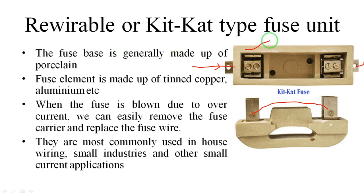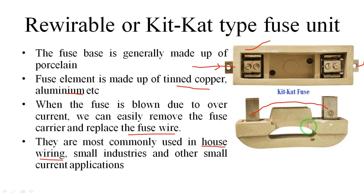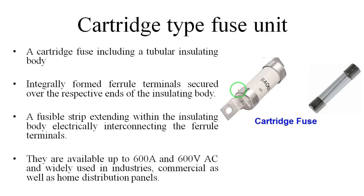The base of this fuse is made up of porcelain material, and the fuse element is made up of tinned copper or aluminium. When the fuse is blown due to overcurrent, we can easily remove or replace the fuse wire with new copper material. These fuses are most commonly used in house wiring, at mains, at small industries, and other low-current applications.